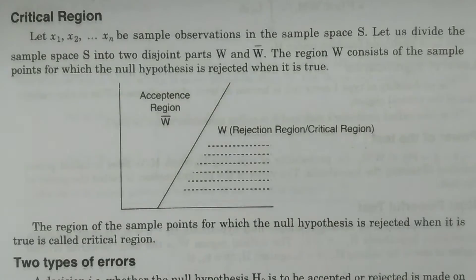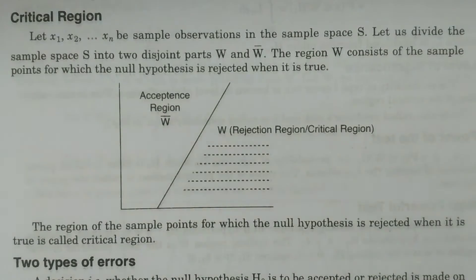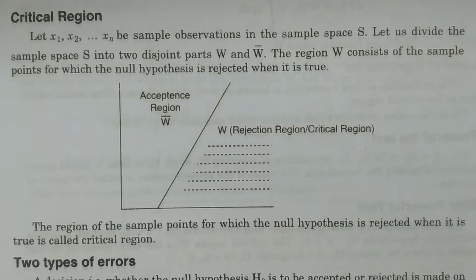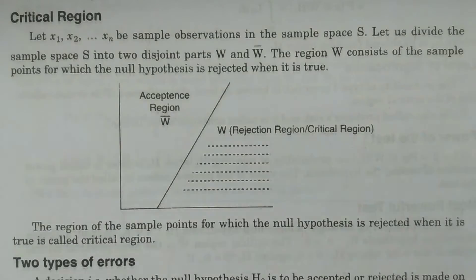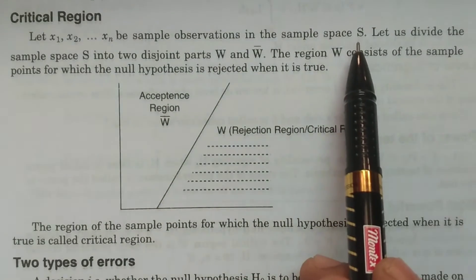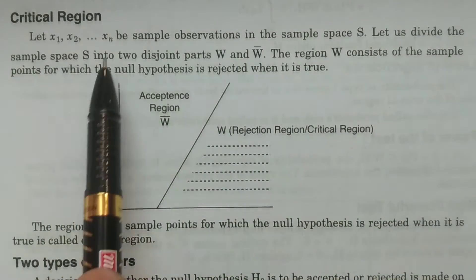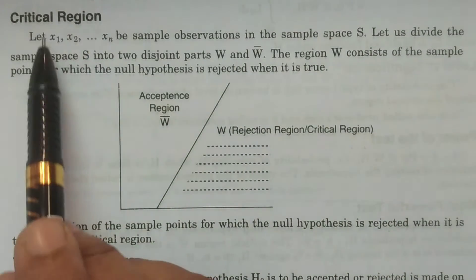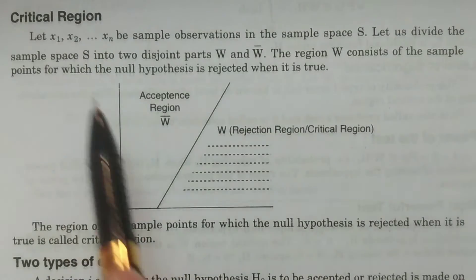The entire study is conducted to determine which kind of decision is going to be taken for the null hypothesis — whether the null hypothesis may be accepted or null hypothesis may be rejected. In the sample space, we are considering some number of sample observations, for example x1, x2, ..., xn, which are drawn from the sample.